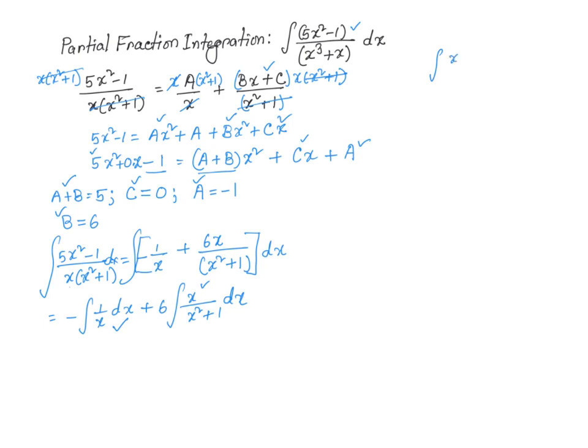So x over x squared plus 1 dx. So I'm going to make the assumption that u is equal to x squared plus 1. So du over dx is just 2, right?